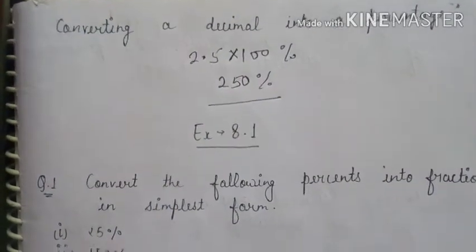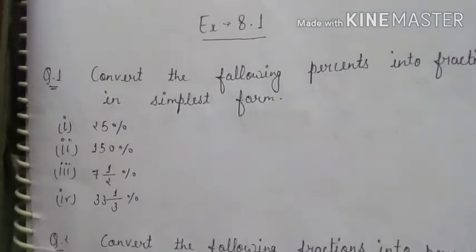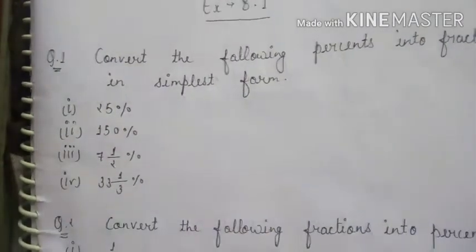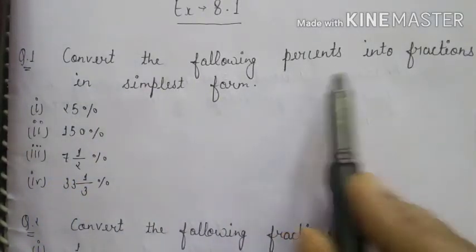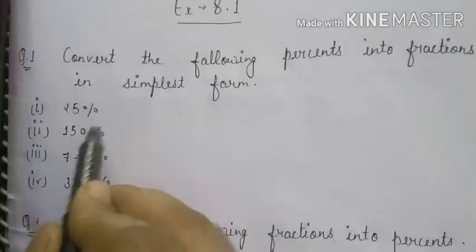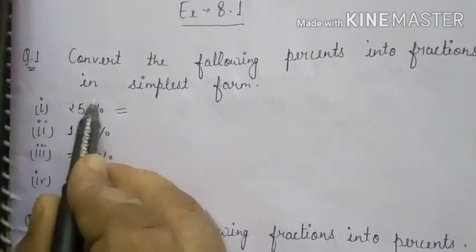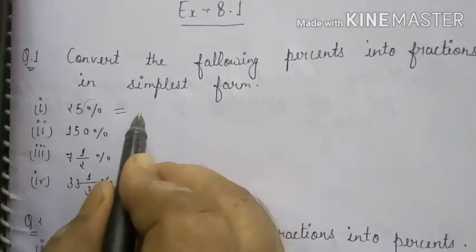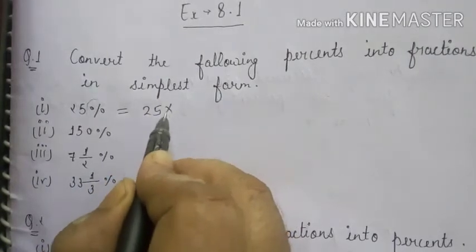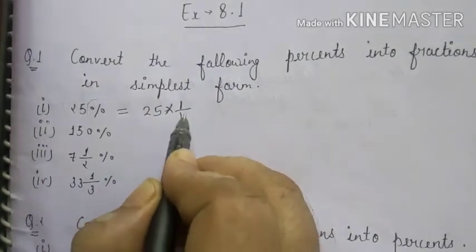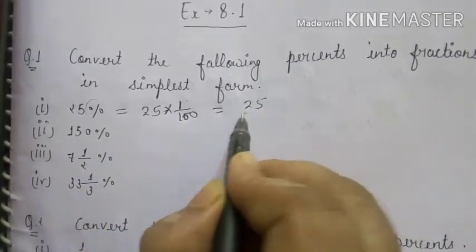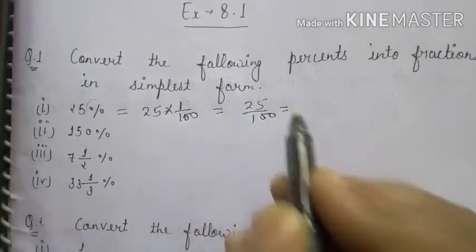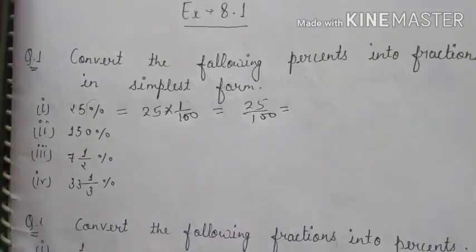Now we start Exercise 8.1. Question 1: Convert the following percent into fractions in simplest form. First, 25%: remove the percent and write 1 upon 100, so it becomes 25 upon 100. Converting to simplest form by cancelling by 25 gives 1 upon 4.